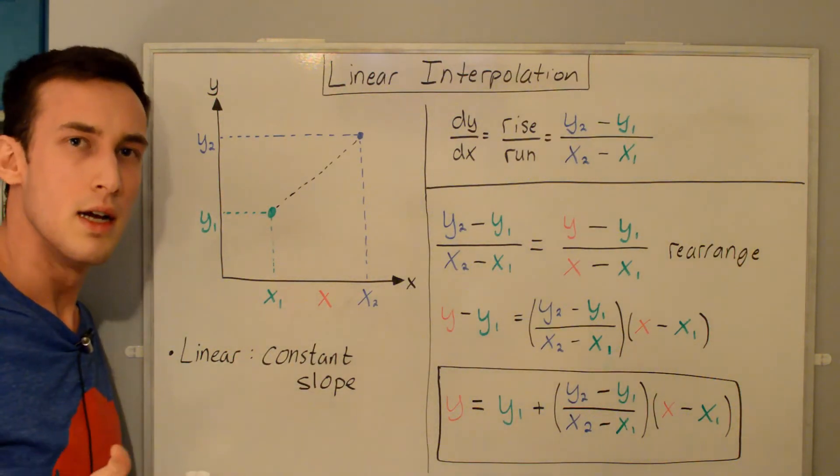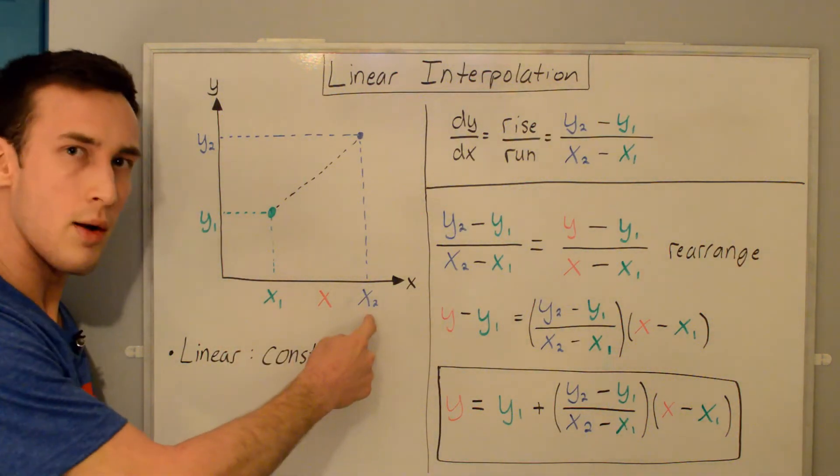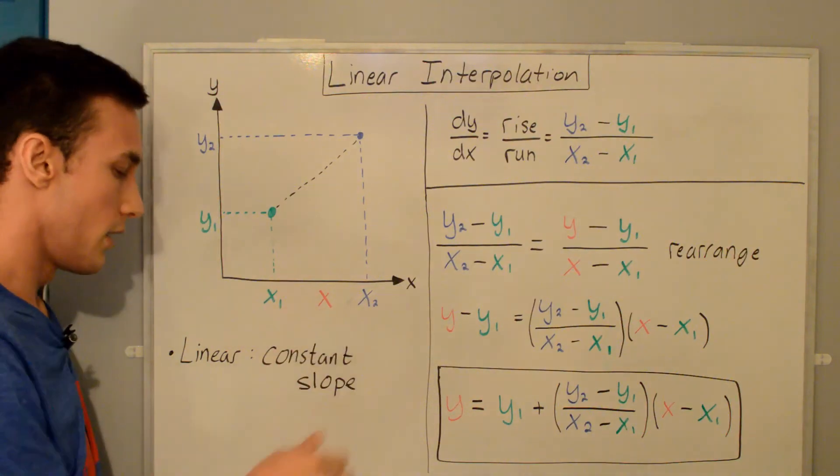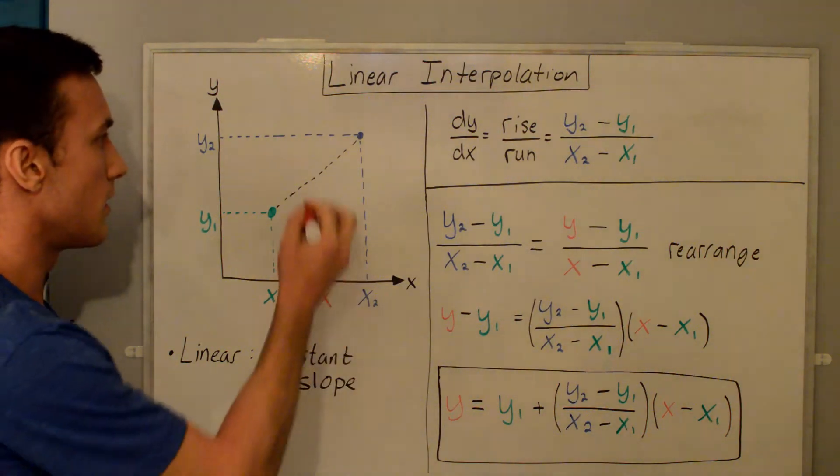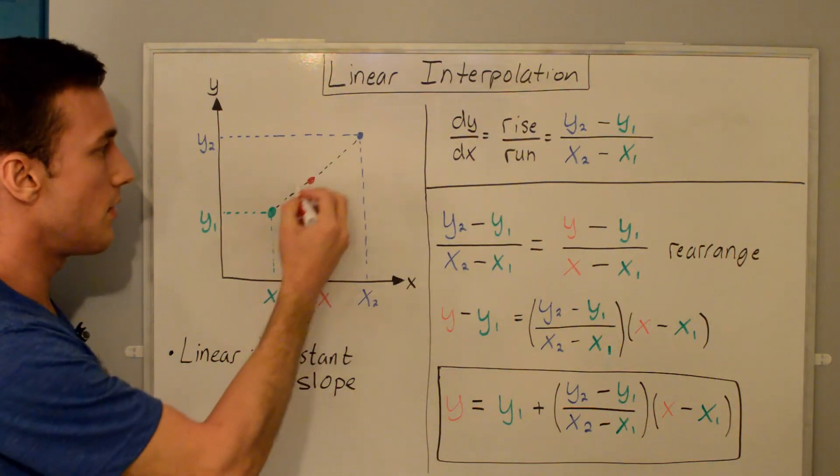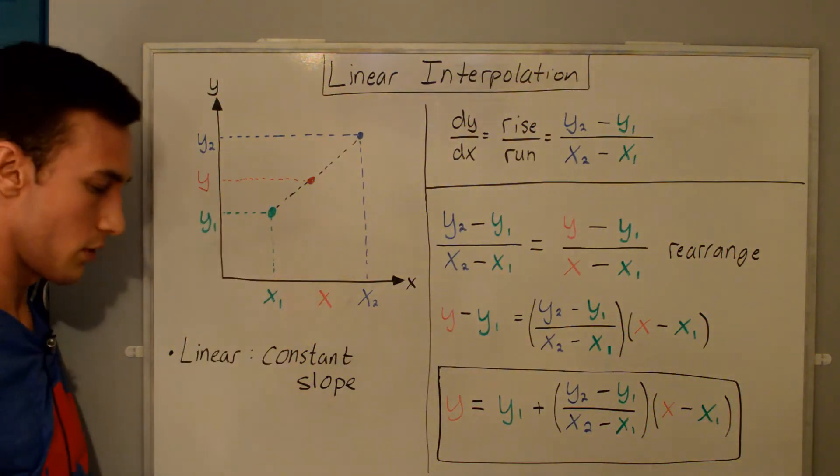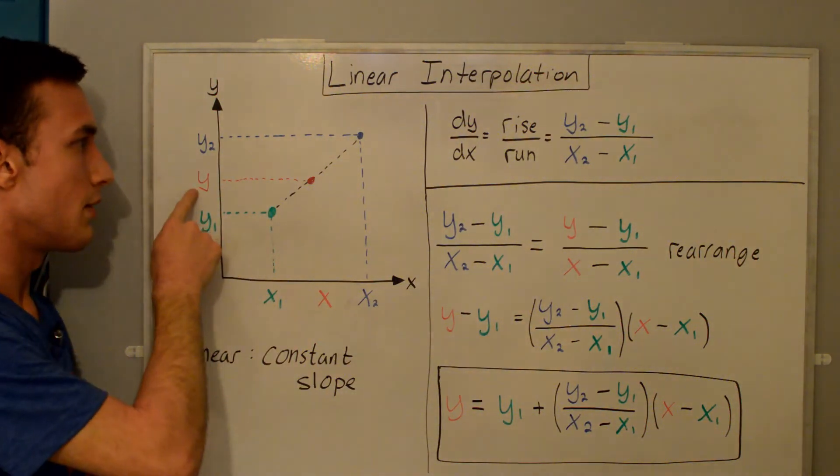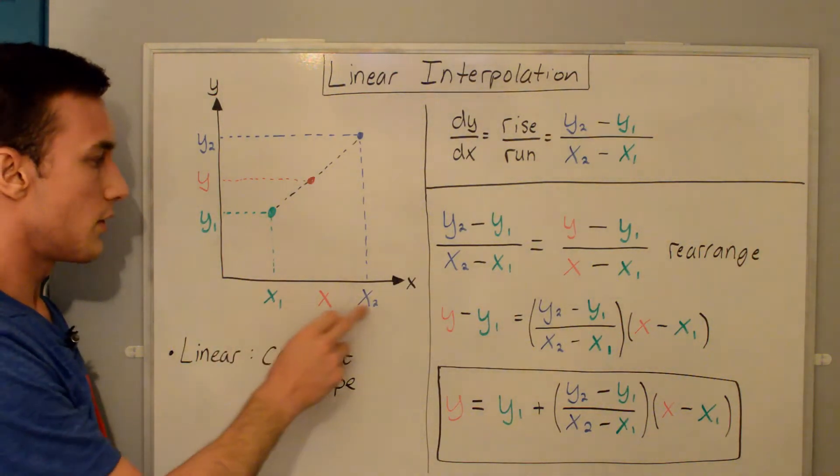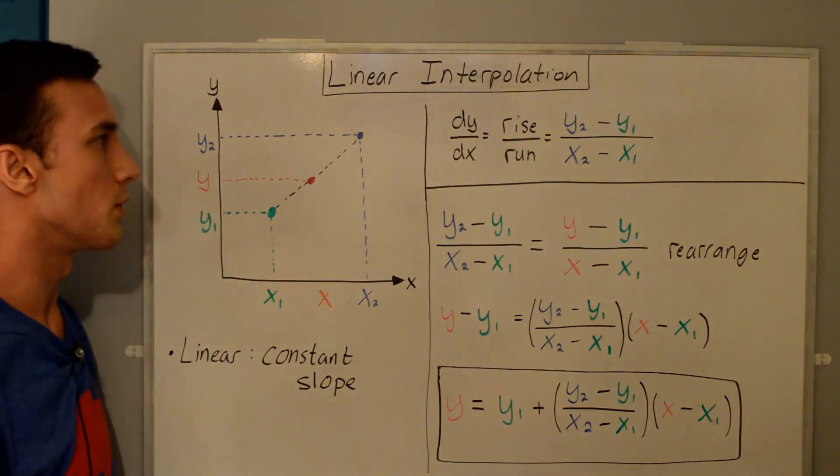Now I say, okay, well, I want the density at this temperature here. What this means is we can draw the point on this line between the two points. This will be the resulting y value. We can get this y value from what I'll show you next, based off of knowing these two, and then this is your input, and then these two y points as well.